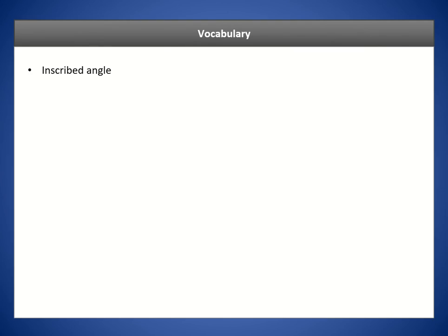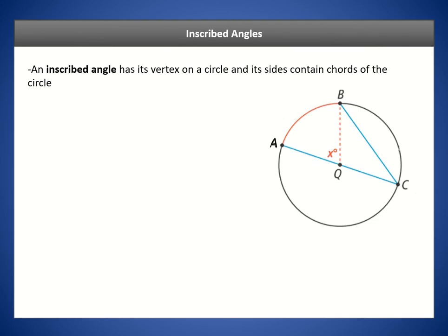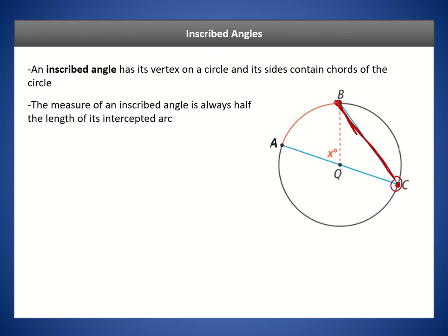In our vocab today it's going to be the inscribed angle. An inscribed angle has its vertex on the circle and its sides contain chords of the circle. You may recall from 10.1 that a central angle has its vertex on the center of the circle, and its sides are radii. For an inscribed angle, the vertex is on the circle itself — not on the center — and the sides are chords, with both endpoints on the circle. So the inscribed angle is the angle between those chords.